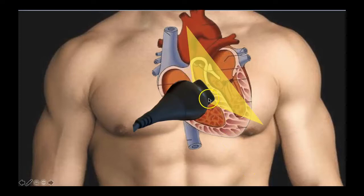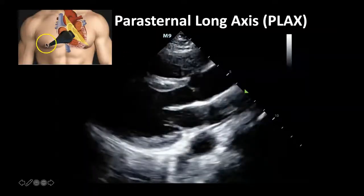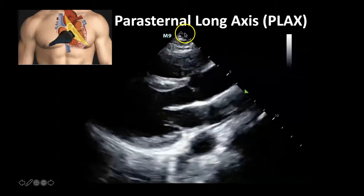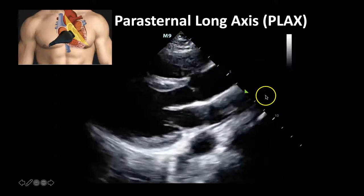In this parasternal long axis view, you're going to be looking at the long axis of the heart. To orient yourself on the image: the probe marker corresponds to the marker on screen, so one side of the screen is the apex of the heart and the other is the base. As with all ultrasound, the top of the screen is closest to the probe and the bottom is deep into the body. Depth measurements on the right side of your screen tell you exactly how deep you are — here's about 5 cm, here's 10, etc.